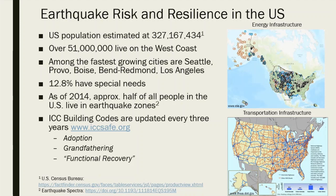Among the fastest growing cities include Seattle, Provo, Boise, Redmond, and Los Angeles. These represent an increase of risk to population but also to the built environment, plus the fact that in some cases the built environment is going up so fast that they're not able to make repairs or changes to a prior existing built environment to make it more resilient or capable of sustaining impacts from an event.